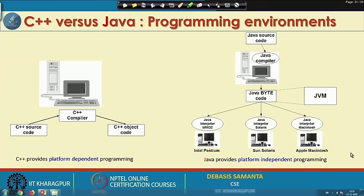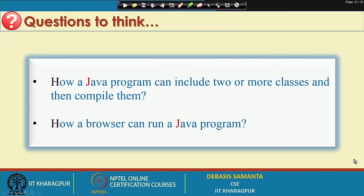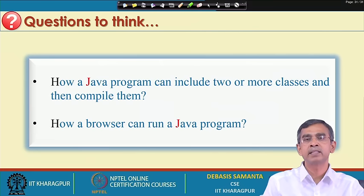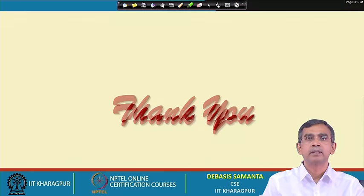We have learned in this lecture the idea about programming, the different steps of programming in Java, and how Java programming differs from C++ or C and other function oriented programming. So far we have discussed a very simple program which includes only one class. In our example we have considered one class namely 'HelloWorldApp.java', but it is possible that a program can consist of more than one class. In our next lecture we will cover whether the same techniques for compiling and executing apply, and also how a browser can execute a Java program. Thank you very much.